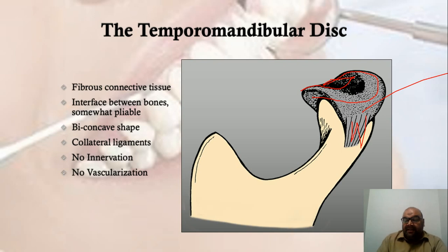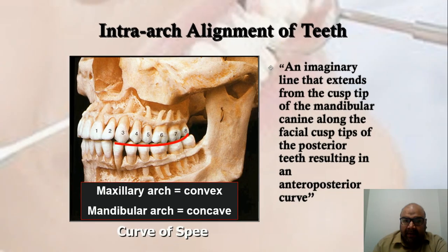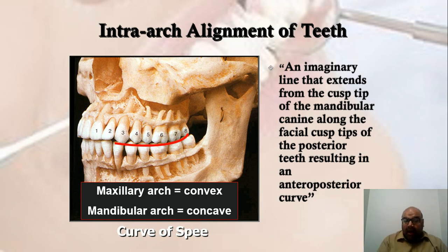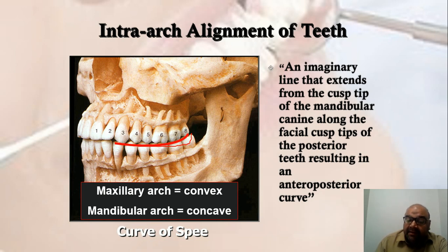Now we look at how teeth are aligned within the dental arches. When teeth are aligned and contact each other, there is an imaginary line that is not straight. This imaginary line starts from the tip of the canine and goes posteriorly up to the second and third molar — it curves. This curvature found in the anterior-posterior or sagittal direction is known as the curve of Spee, named after an anatomist from the 16th century.